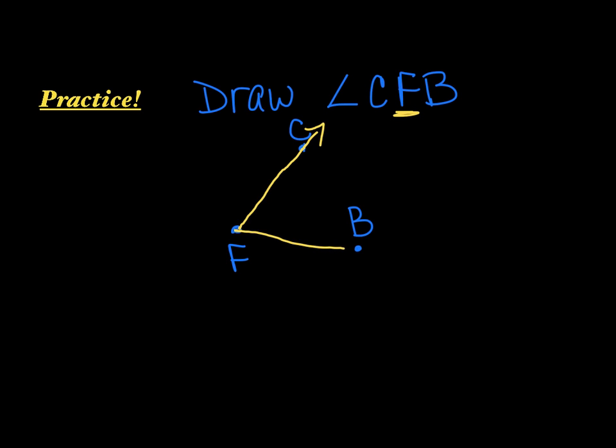I will connect those points and draw arrows at the end for my rays. And as you can see, when I look at my angle, it is angle C, F, B. Could I call it anything else? Yes, it could also be angle B, F, C. Now what is the vertex of this particular angle? My vertex would be letter F, or point F.